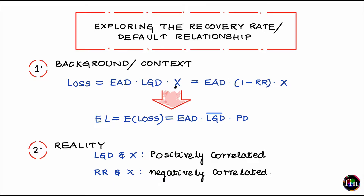The third input is a Bernoulli random variable X which takes the value 1 if default were to happen and the value 0 if default does not happen. The probability that default happens — that means X takes the value 1 — let that be equal to the PD, the probability of default of my borrower.